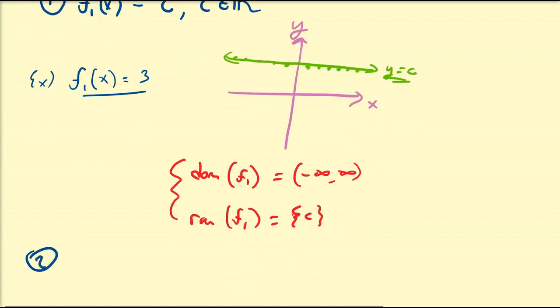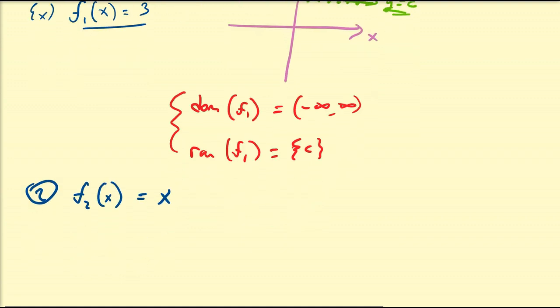The second basic function, f₂(x), is going to be equal to just x — the variable x. When x is equal to 1, y is equal to 1. When x is equal to 2, y is equal to 2. When x is equal to 3, y is equal to 3. When x is equal to 0, y is equal to 0. You may start seeing the picture.